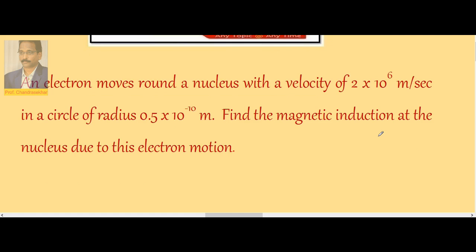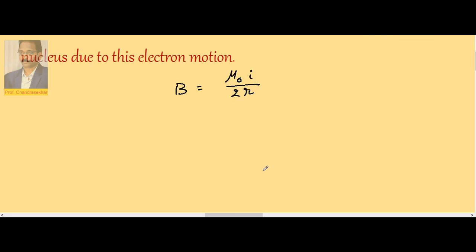We know that B = μ₀i / 2r. Since one electron is considered, the rate of flow of charge is called current. If charge e revolves around the nucleus in a circular orbit with time period T, then the electron current i = e/T, where T = 2πr/v.